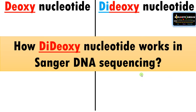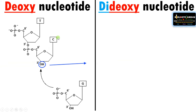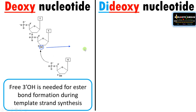Now let us see how dideoxynucleotide works in Sanger's DNA sequencing method. In a normal deoxynucleotide, the 3' OH hydroxyl group is essential for the formation of an ester bond with the phosphate of the incoming nucleotide. This phosphate and OH form an ester bond — this is the first ester bond in a DNA molecule. So a free 3' OH is essential for ester bond formation during template strand synthesis.